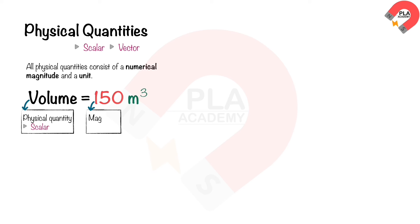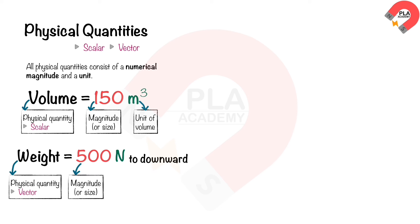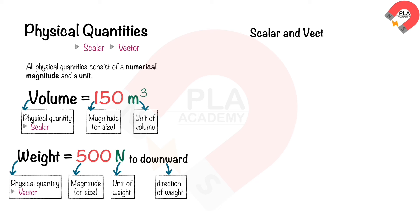The value of 150 represents the numerical magnitude or size of the volume. The cubic meters represents the unit of volume. The weight of 500 newtons: the weight is a physical quantity; it is a vector quantity because it has both magnitude and direction. The value of 500 represents the numerical magnitude or size of the weight. The newton is the unit of weight. The direction of weight is always downward.